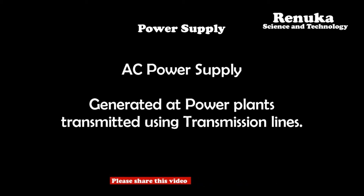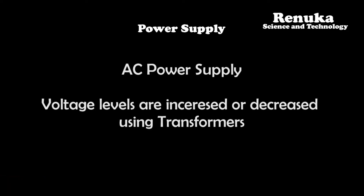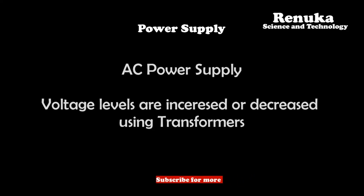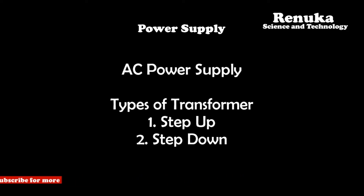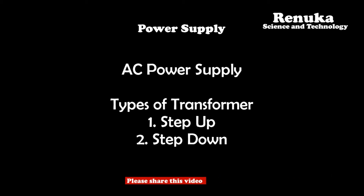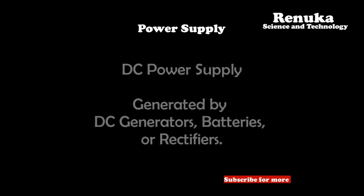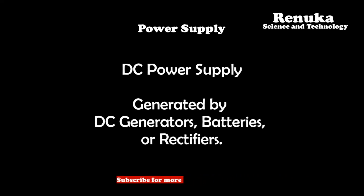The strength of AC power supply can be easily increased or decreased with the help of a transformer. There are two types of transformers with which we can either increase or decrease the voltage. This AC power supply can also be easily converted into DC using some circuits.